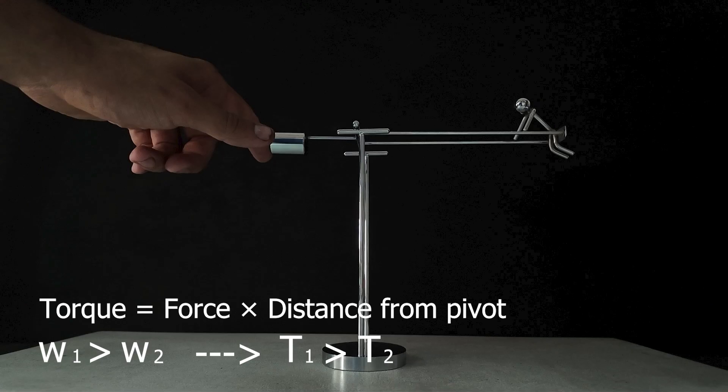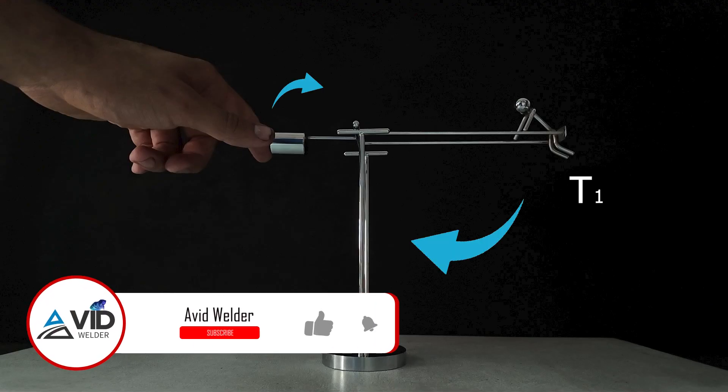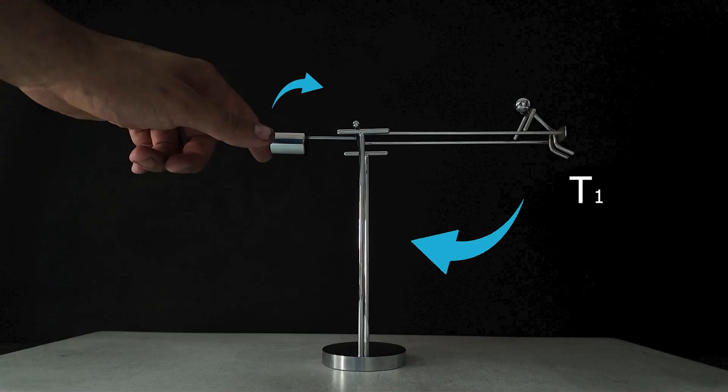Now, because the side with the figure creates slightly more torque than the other, it can overcome the downward pull on the opposite side and push it back the other way. This small difference in torque is what causes the sculpture to move in a slow and gentle motion.